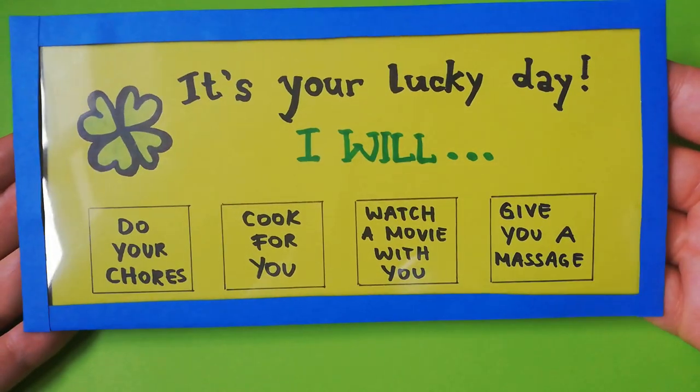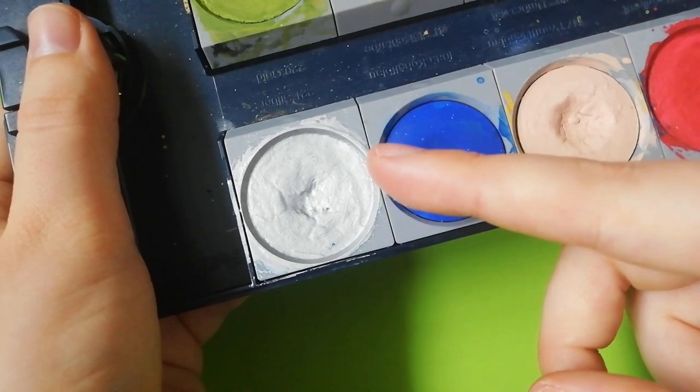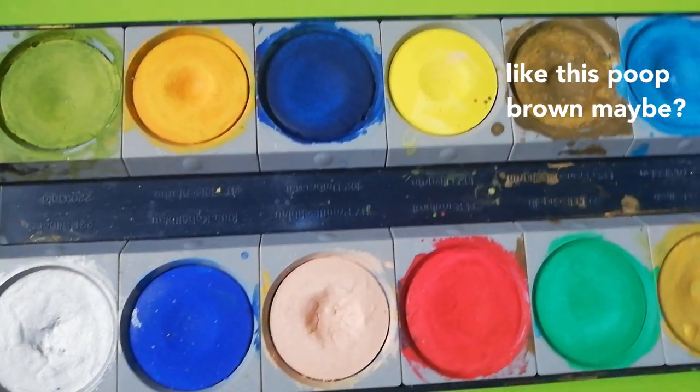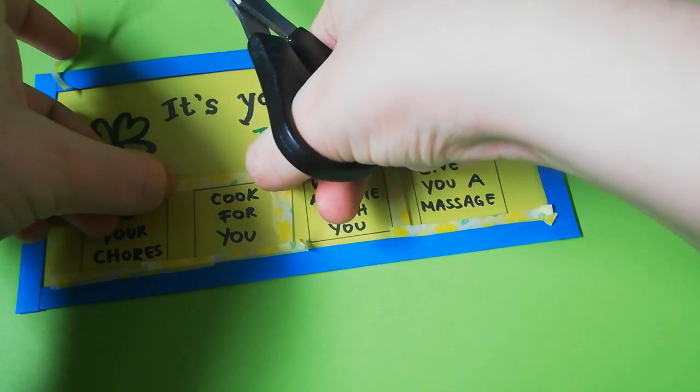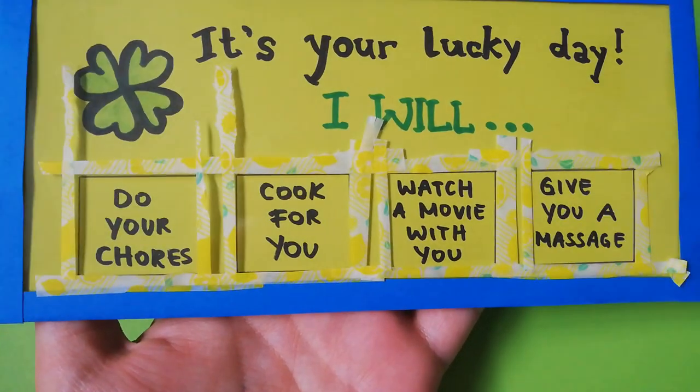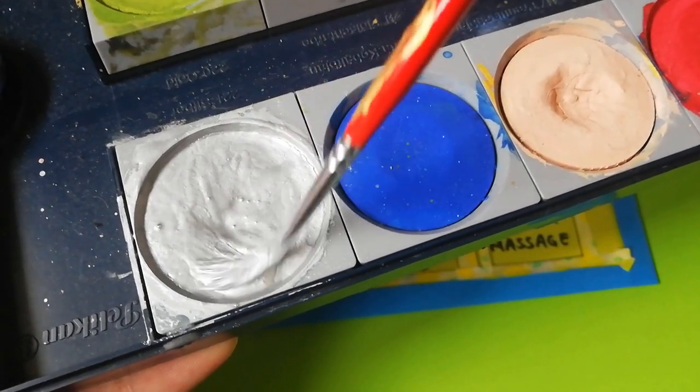Now to my favorite part, making the scratchy area. I happen to have silver watercolor but you can use any color you want. You can either freehand the paint or you can make a border using masking tape. And then you just need to load your brush with a lot of pigment.